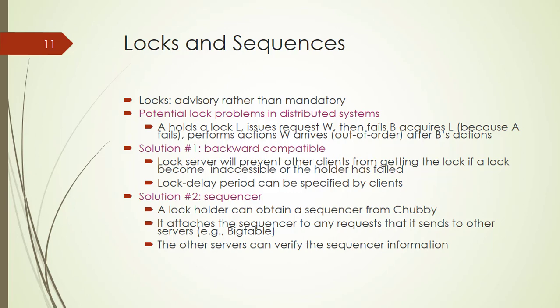For the backward compatible solution: the lock server will prevent other clients from getting the lock if a lock becomes inaccessible or the holder has failed. Also, a lock delay period can be specified by clients. The second solution is a sequencer: a lock holder can obtain a sequencer from Chubby and attach the sequencer to any request it sends to other servers, such as Bigtable. The other servers can verify the sequencer information, thus avoiding that problem.